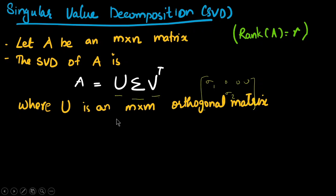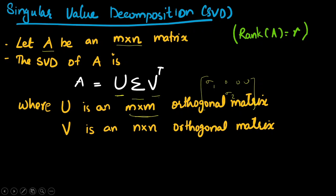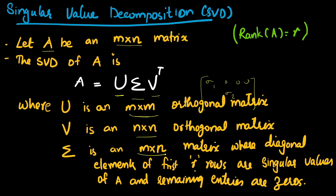In A = U Σ V^T, U is an m by m orthogonal matrix (since A is m by n), V is an n by n orthogonal matrix, and Σ is an m by n matrix where the diagonal elements of the first r rows are the singular values of A and all remaining entries are zeros — because the rank of A is r.